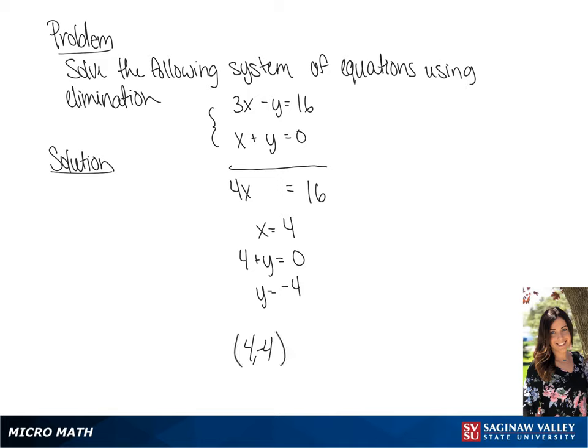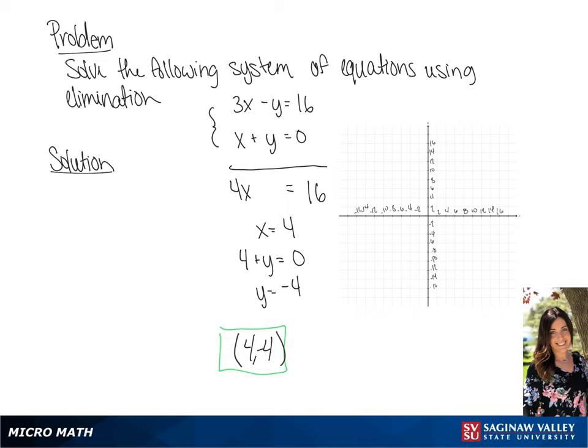So the solution to the system of equations is 4, negative 4. We can show this by graphing our system of equations.